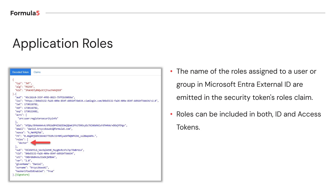Roles can be included in both ID and access tokens — there is some confusion and many people ask about it. Can you assign app roles and include this information in not only the ID token, but also in the access tokens used with APIs or resources? Yes, you can. Information about the roles can be included in both ID and access tokens when it comes to Microsoft Entra External ID.